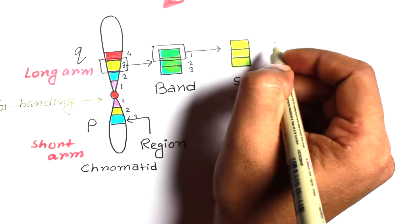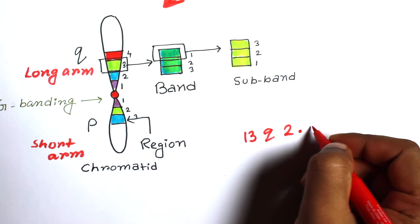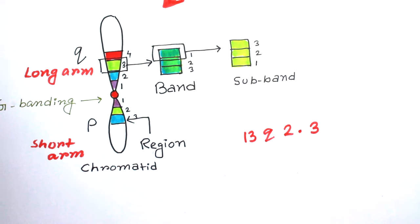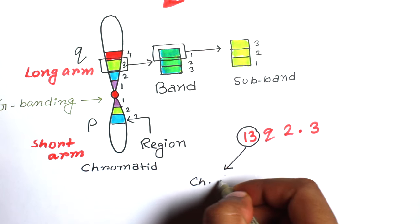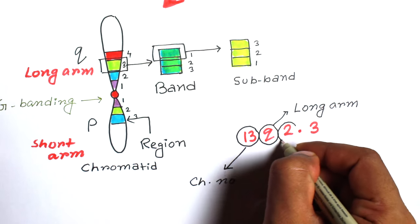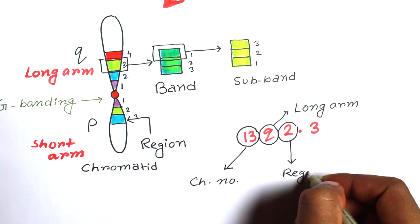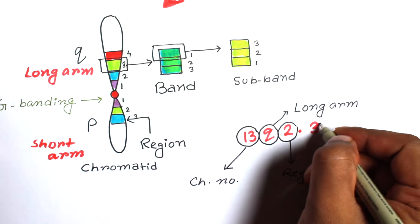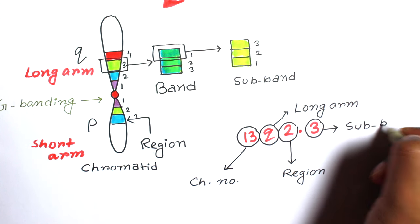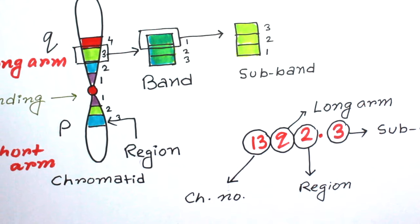Suppose it is written as 13q2.3, which signifies a specific gene location on chromosome number 13. Let's decode it. Here, 13 is the chromosome number, Q is the long arm of the chromosome, and the very first number just after Q is the region number. So here, 2 is the region number, and the number just after the point is sub-band number. So here, 3 is the sub-band number.